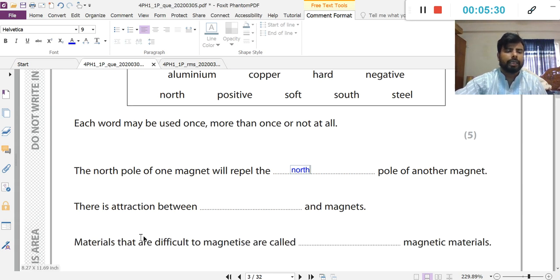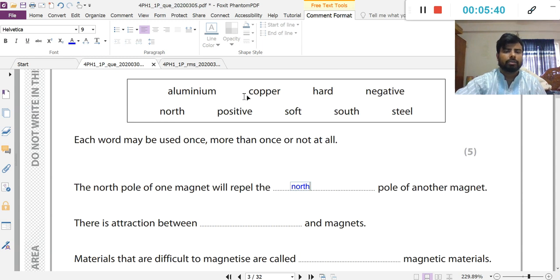There is attraction between dash and magnets. The north pole of one magnet will repel the north pole of another magnet. There is attraction between dash and magnet. Steel and magnet. Steel is a magnetic material. There is another property of magnet: magnet attracts magnetic material. So steel is a magnetic material.